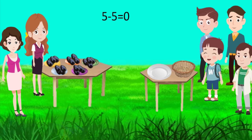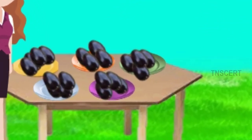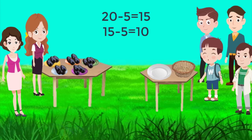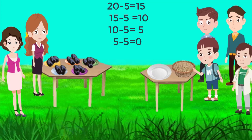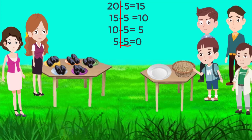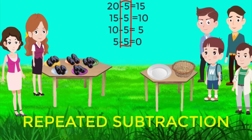Now, the basket is empty. See, I have distributed 20 fruits to 5 of my friends for 4 times. 20 minus 5 is equal to 15. 15 minus 5 is equal to 10. 10 minus 5 is equal to 5. 5 minus 5 is 0. We have subtracted the number 5 continuously for 4 times. This way of subtraction is known as repeated subtraction.